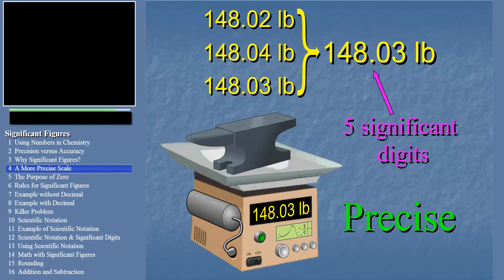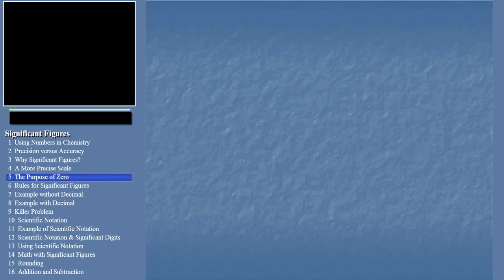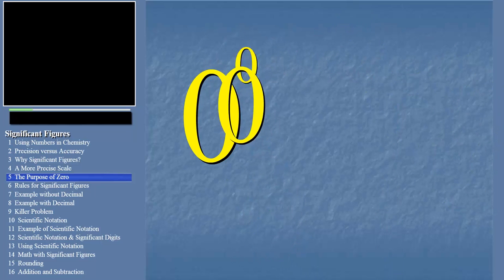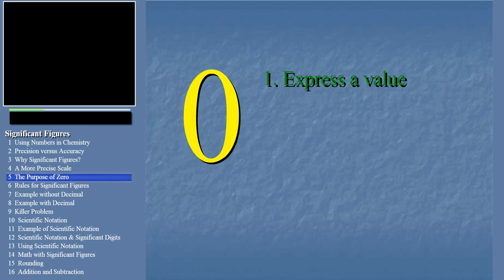To summarize, the significant digits are all the certain ones plus the one which is slightly uncertain. In this case, the 3. Now there's one more concept that's important for you to understand. That's the way we use the digit zero in expressing precision. Zero can be used in two ways, either to express an actual value or to simply indicate the power of 10 in the number.